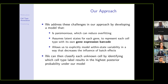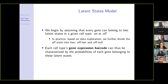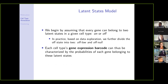Now I'll describe the model in more detail. We assume a latent states model where within any given cell type, every gene can belong to one of two latent states: either it's on, indicating the gene is expressed, or it's off, indicating it's unexpressed. Based on our data exploration, we further subdivide the off state into two components: an off-low component representing very low but not necessarily zero expression, and an off-null component representing essentially zero expression. Every cell type is then represented with a gene expression barcode characterized by the probabilities of each gene belonging to each of these latent states.